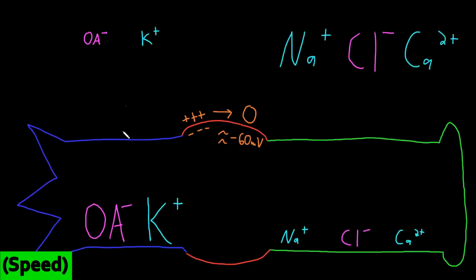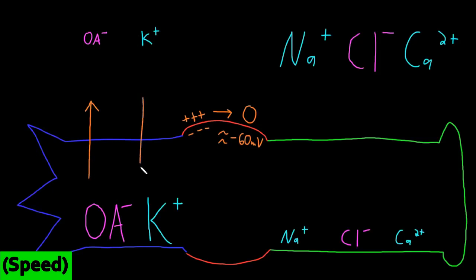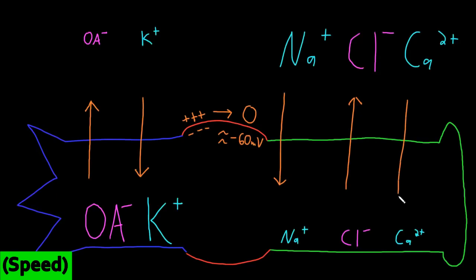Each of these ions is acted on by two forces that try to drive them into or out of the neuron. The first is an electrical force from the membrane potential, because each ion is attracted to the side of the membrane with the opposite charge. Organic anions are negatively charged, so the electrical force drives them out. Potassium is positively charged, so it's attracted inward. Sodium is also attracted inward. Chloride is driven out, and calcium is driven into the neuron.